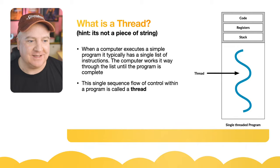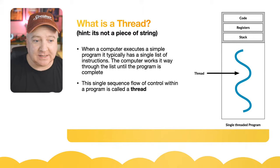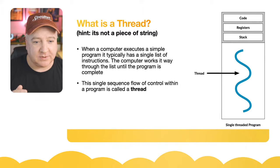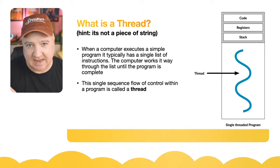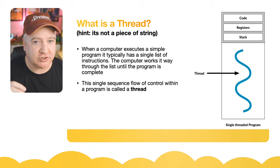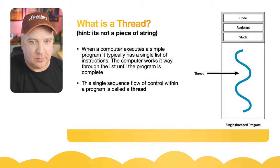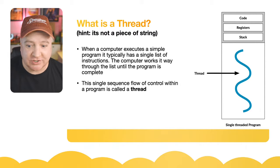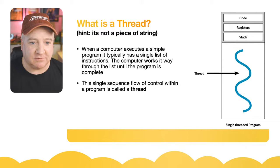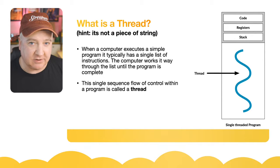What is a thread? In computer science, when a computer executes a simple program it typically has a list of instructions and works its way through until the program is complete. That single flow of code is called a thread. Typically a thread has a stack - if you create a variable it gets put on the stack, when you call a function that gets put on the stack, like a stack of plates. We also have registers and the code itself.